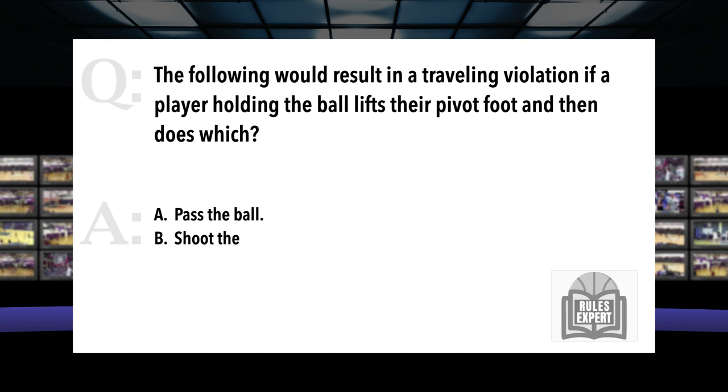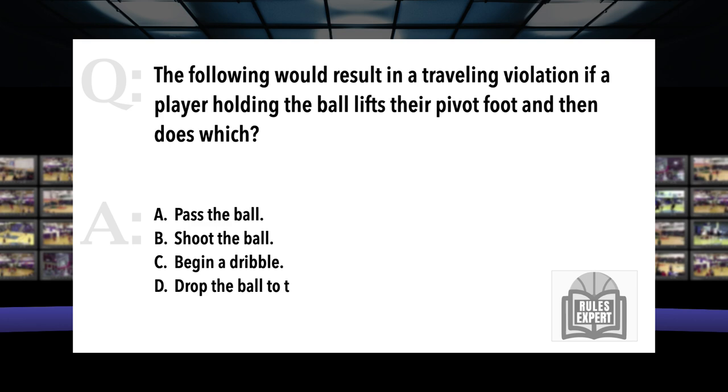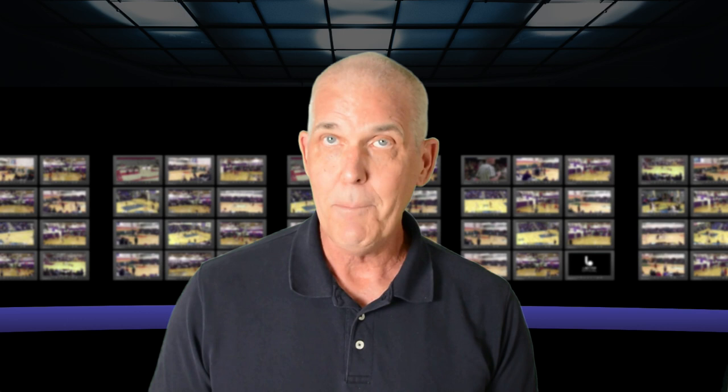Question. The following would result in a traveling violation if a player holding the ball lifts their pivot foot and then does which? A. Pass the ball. B. Shoot the ball. C. Begin a dribble. Or D. Drop the ball to the floor. It's a great way to start here at Basketball Rules Expert Show because it forces us to go to the most important rule in the rules book, and that is rule number four, definitions.